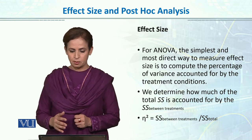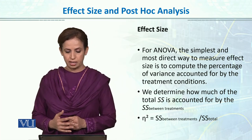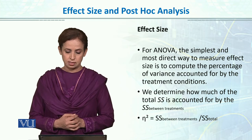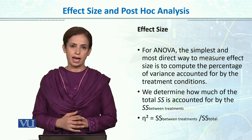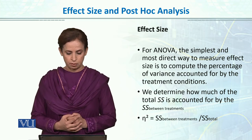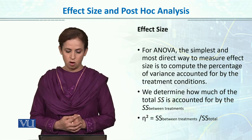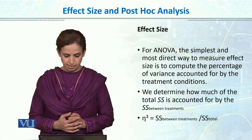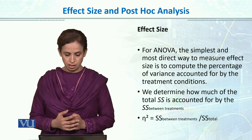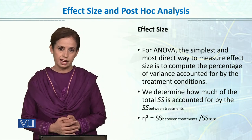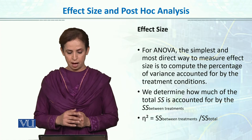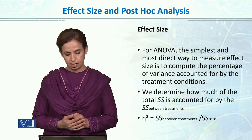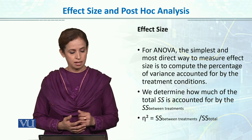For ANOVA, the simplest and most direct way to measure effect size is to compute the percentage of variance accounted for by the treatment condition. We determine how much of the total SS is accounted for by the SS between treatments. The method is to take SS between treatment divided by the total SS.